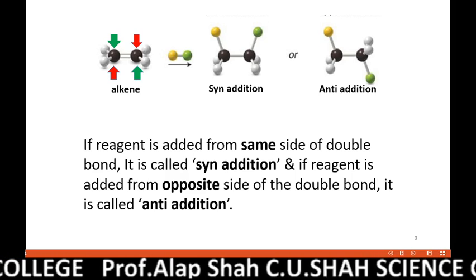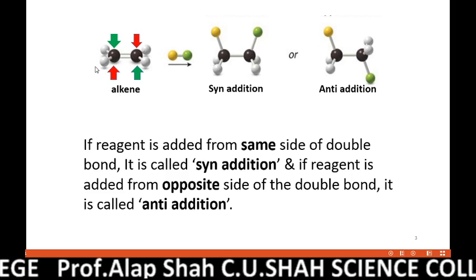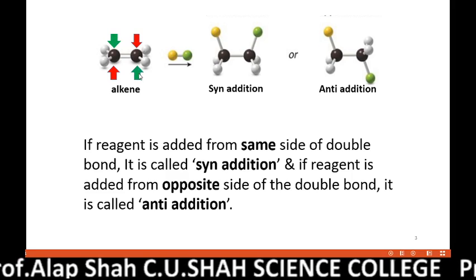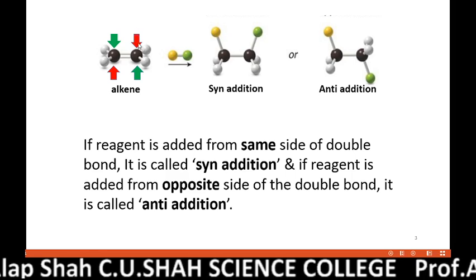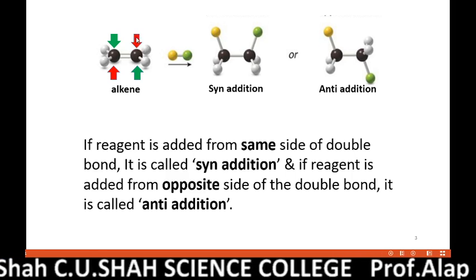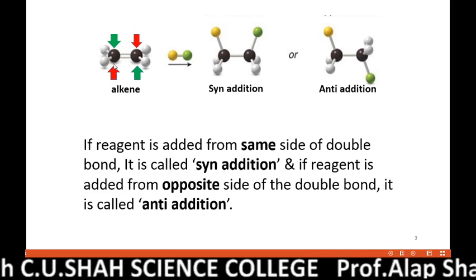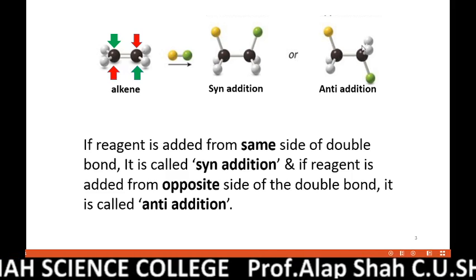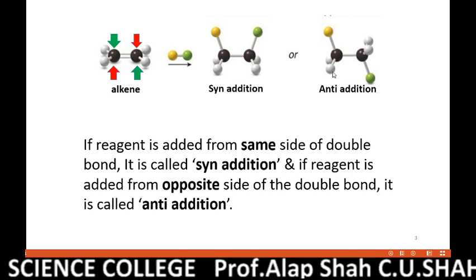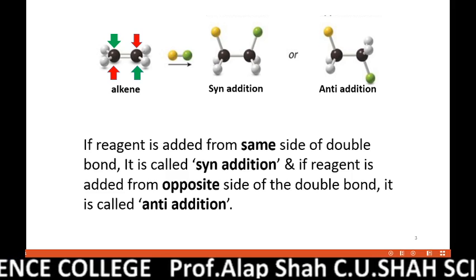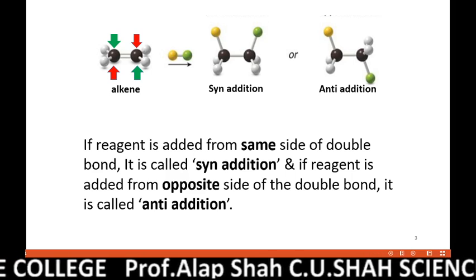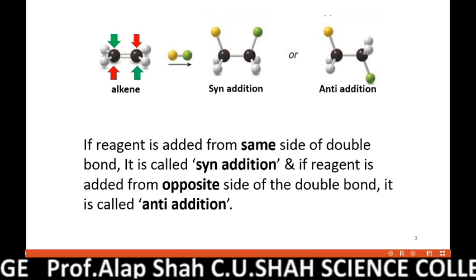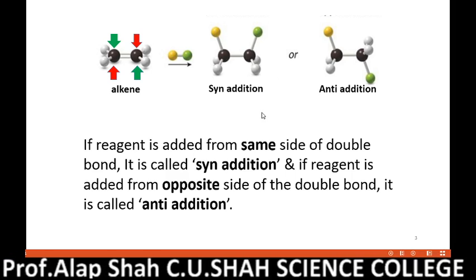Anti-addition can occur in two different ways, as shown here with arrows. Focusing on the green arrow: one group comes from the plane above while the other comes from the plane below. Similarly with the red arrow, one group is added from the plane above and another from the plane below. It is not necessary that only one product results — yellow can be added to one carbon and green to the other. Keeping this in mind, let us discuss bromination of cis-2-butene and trans-2-butene, and always remember that both reactions follow anti-addition.